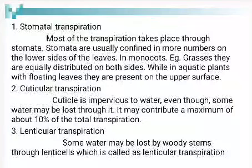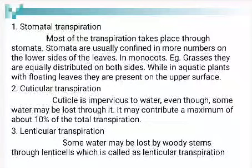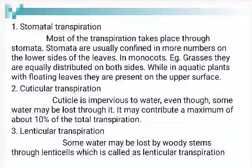In dicotyledon plants, stomata are present on the lower surface only. In monocot plants, stomata are distributed on both the upper and lower surfaces because the leaf size of monocot plants is reduced compared to dicots. In aquatic floating plants, stomata are on the upper surface because the lower surface is submerged in water and the upper surface faces the atmosphere.